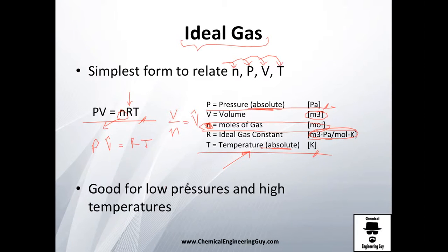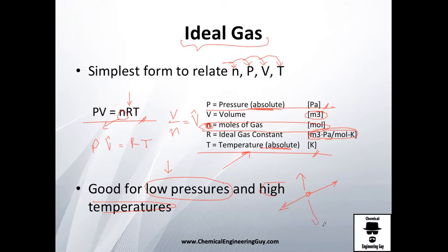The ideal gas law applies when pressures are relatively low and temperatures are relatively high — essentially when you want to keep particles as far apart as possible. Decreasing pressure spreads molecules out, and increasing temperature makes them move faster.